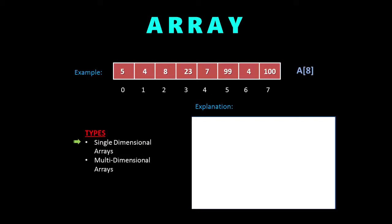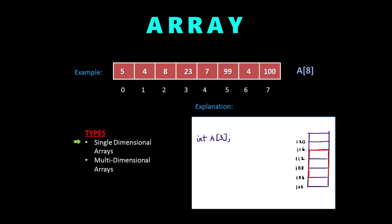Now we'll look at the types of arrays. There are two types: single-dimensional arrays and multi-dimensional arrays. Single-dimensional arrays are simple arrays like the one we just created. For example, if we create an array 'int a[3]', we can see that memory from address 104 to 115 is allocated by the RAM for this array. We have multiples of 4 because integers have a size of 4 bytes, and we can fill in values which get stored in memory.